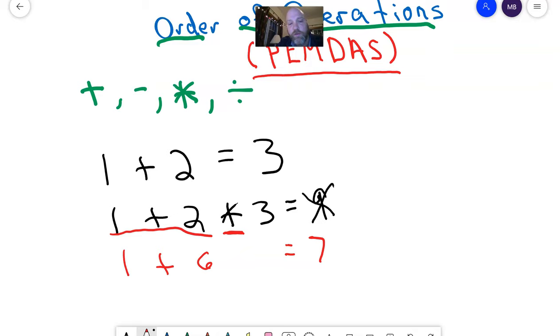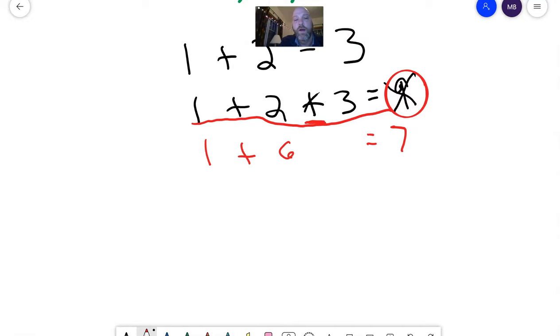If I just did that addition part first, I would have got an answer of nine. But because we have a specific order of operations, that changes everything. So a problem like this that seems really easy - one plus two times three - the answer is not apparent because you have to follow the order of operations. All right, let's try another one.